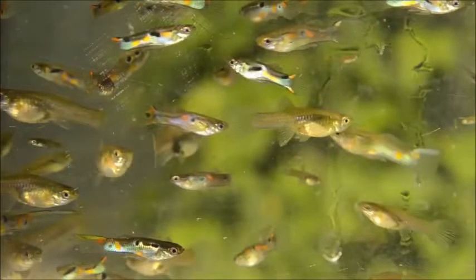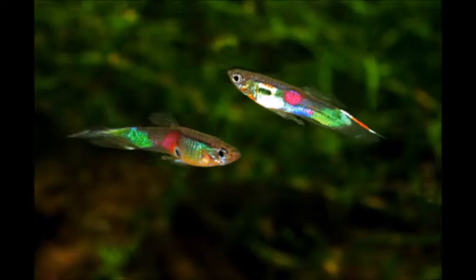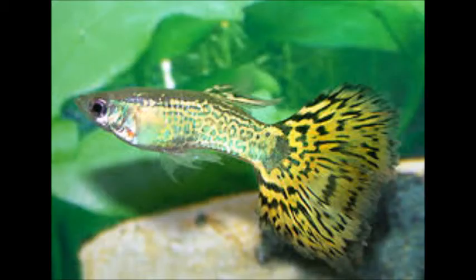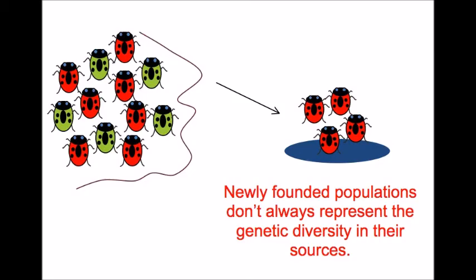Another example would be guppies. In nature, male guppies are not particularly colorful because they must balance beauty for females with camouflage from predation. In environments where there are no predators, the male guppies become very colorful. Artificial selection of guppies can make them even more colorful.